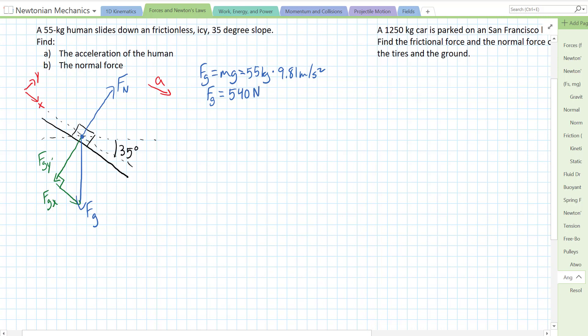Okay, so now we need to find the x and y components of our gravitational force. From geometry, we can actually find them. If this angle is 35 degrees here, then this next angle is going to be 90 minus 35, which is 55 degrees. Which means this little angle right here is going to be 35 degrees again, because it's 90 minus 55.